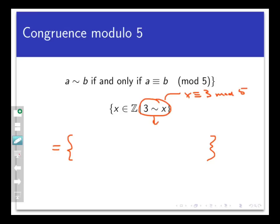Well, what are some of those? Well, 3 is certainly congruent to itself mod 5, because 5 divides 3 minus 3. 3 minus 3, of course, is 0. 3 is also congruent to 8 mod 5, and also 13, and 18, and 23, and so on.